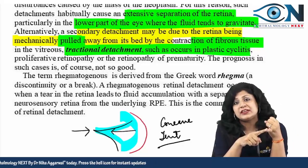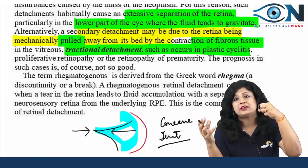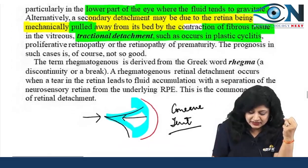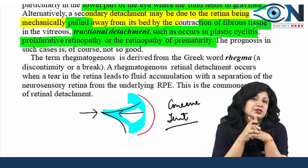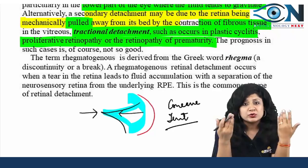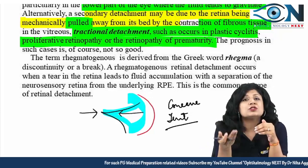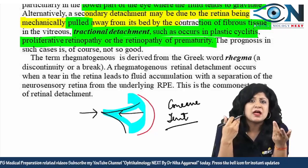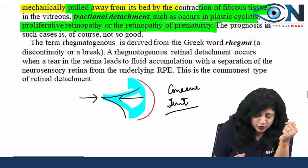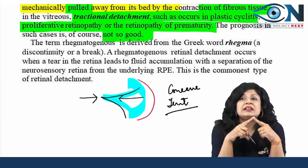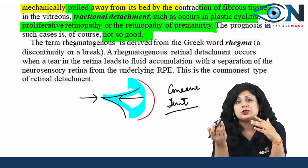Causes of tractional RD include any strong fibrovascular tissue capable of pulling the retina — plastic cyclitis, proliferative diabetic retinopathy, retinopathy of prematurity (ROP), and recurrent vitreous hemorrhage. Causes of recurrent vitreous hemorrhage include trauma, sickle cell retinopathy, and PDR — all can lead to tractional RD. Tractional RD is chronic, leads to gradual diminution of vision, and has a poor prognosis.